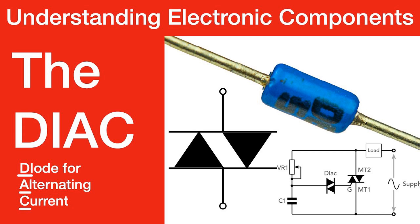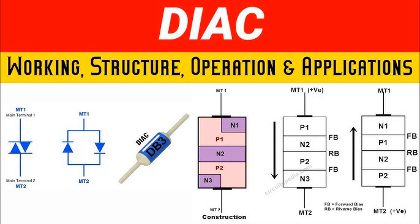Application 5 — AC phase control: phase control circuits are used to adjust the power delivered to an AC load by delaying the triggering point in the AC cycle. DIACs play a crucial role in these circuits by controlling the phase angle at which a TRIAC is triggered, which in turn adjusts the output power. Examples include fan speed controllers, ceiling fans, and light dimmers in residential and commercial lighting systems.